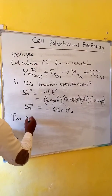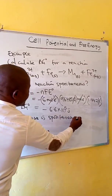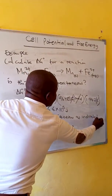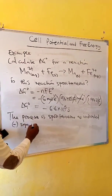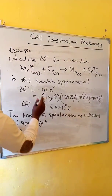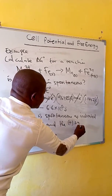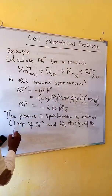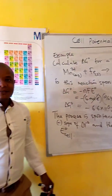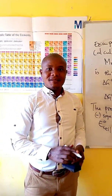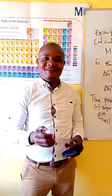The reaction is spontaneous, as indicated by the negative sign of delta G and the positive sign of the cell potential. So this is how we can calculate the free energy for a reaction. In the next tutorial we will look at the next equation. Do not forget to subscribe to my channel. Thank you, bye bye.